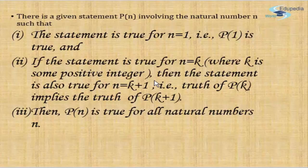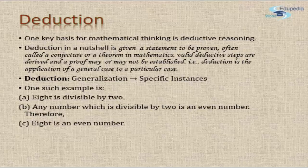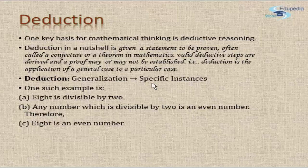Here is the step-by-step process: there is a given statement P(n) involving natural numbers. The statement is true for n equals one, that is P(1) is true. If the statement is true for n equals k, where k is some positive integer, then the statement is also true for n equals k+1, established by P(k+1). If you are able to prove this second statement, you can induce that P(n) is true for all natural numbers.